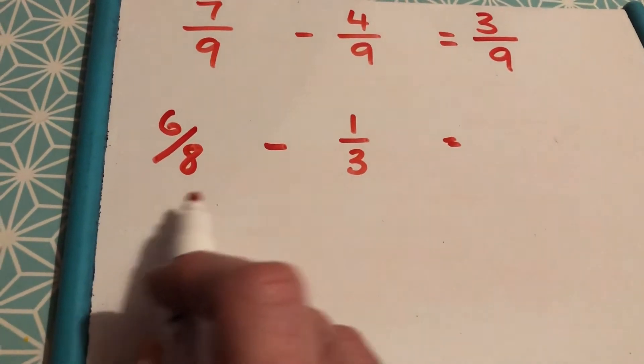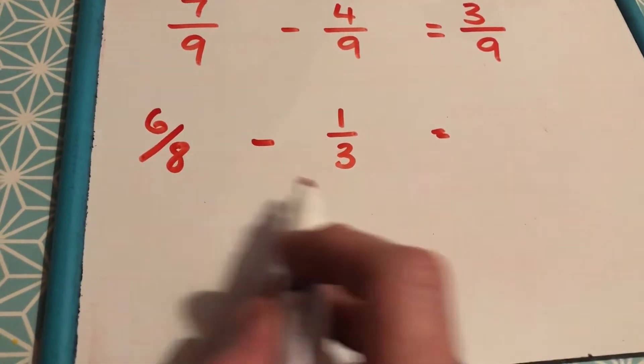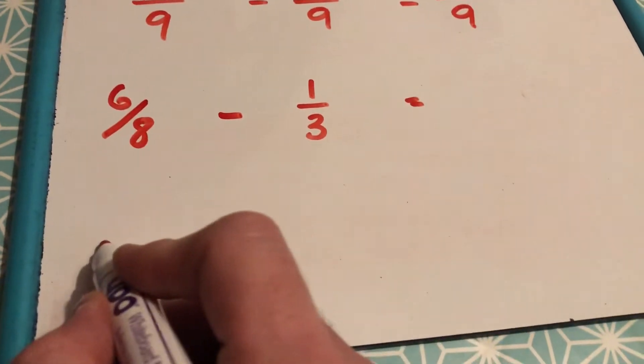Here, we've got 6/8 subtract 1/3. This time, denominators are different, so we have to find a common denominator.